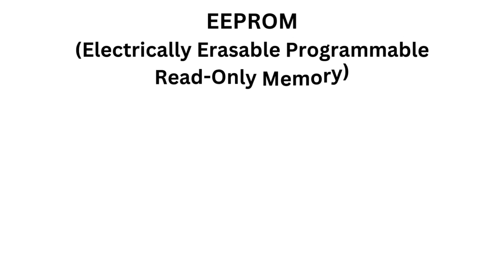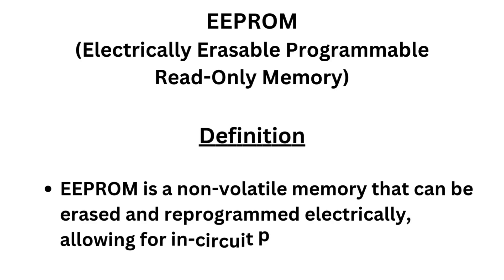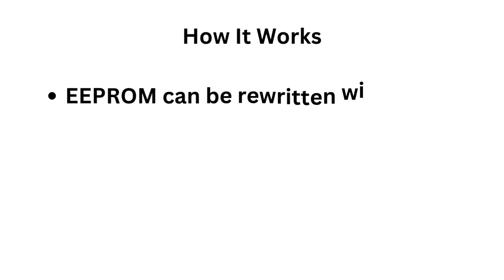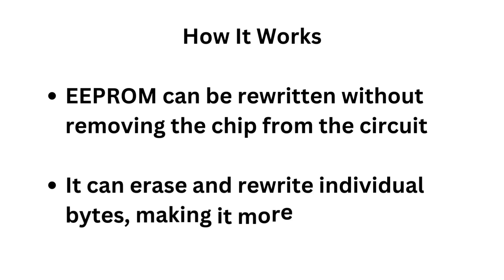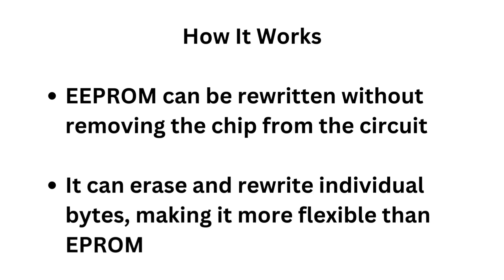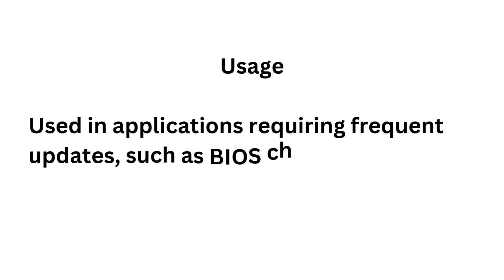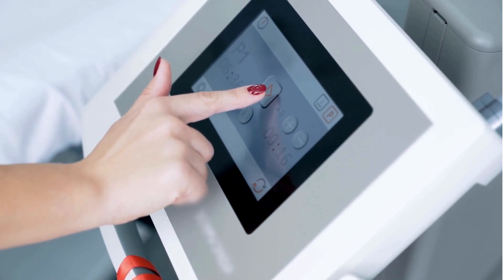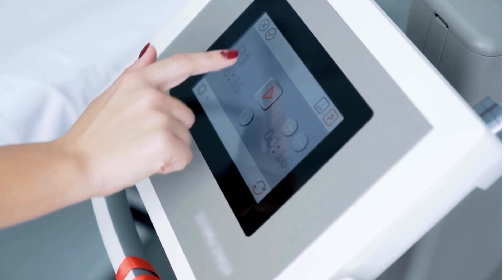EEPROM, or Electrically Erasable Programmable Read-Only Memory: EEPROM is a non-volatile memory that can be erased and reprogrammed electrically, allowing for in-circuit programming. EEPROM can be rewritten without removing the chip from the circuit, and it can erase and rewrite individual bytes, making it more flexible than EPROM. It is used in applications requiring frequent updates, such as BIOS chips, configuration settings in computers, and other devices. Some modern devices use EEPROM to update firmware, making it possible to improve software performance without replacing hardware.